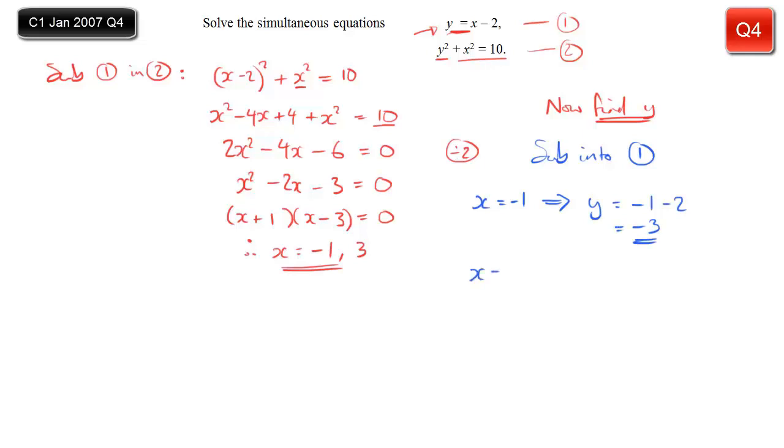And then when x equals 3, put that into equation 1. It tells you that y is 3, take away 2. Of course that's 1. And we're finished. You've solved it. You could give them as coordinate pairs. I tend to write it like this. x equals minus 1, y equals minus 3. Or x equals 3, y equals 1. Either way, we're done.